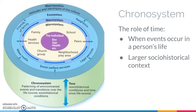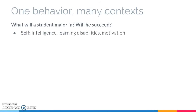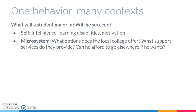So we have these layers which start at the middle and go out, but it's important to remember that there's not always a nice clear division between one layer and the next. As one example, let's look at someone who is starting college this year and we can think about what might affect his major and his odds of success. At the individual level, we need to look at his intelligence, his personality, and so on. At the microsystem level, we would look at what majors are even available at his local college and whether he can afford to go elsewhere if he wants.